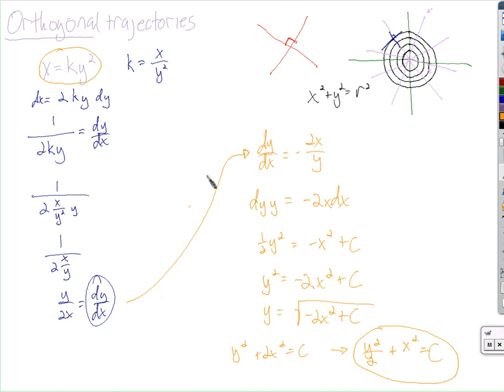So ours, an orthogonal set of curves, will have a derivative, a dy dx, that is the opposite reciprocal of this slope. So here's the opposite reciprocal, and now we have a differential equation, which we then separate the variables and solve. And we have a set of curves, no matter what c we choose, no matter what k we choose, at their intersection points, they will be perpendicular, orthogonal.